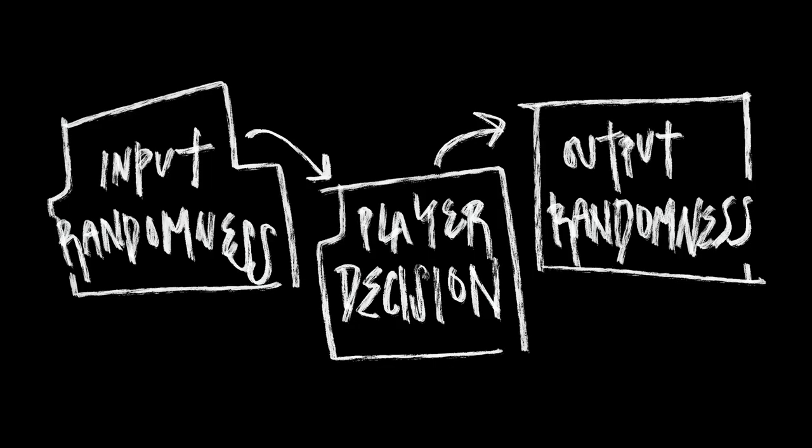First, our discussion assumes that uncertainty is an important part of what makes games fun. This goes really deep with game designers and this is a high level video, so please just accept our baseline: uncertainty is a part of fun in games. Here is one of our famous diagrams — input randomness, player decision, output randomness. Input randomness are events that the player has no control over, that the player has to react to, that affects their decision making and planning.